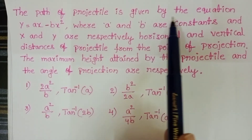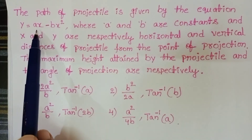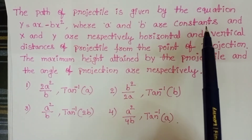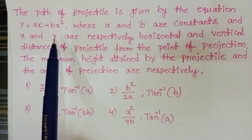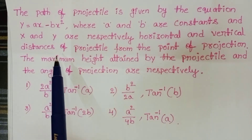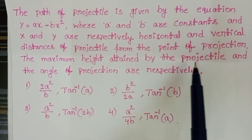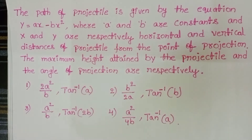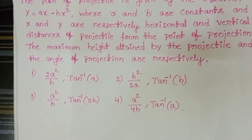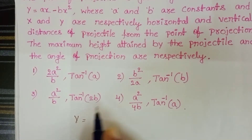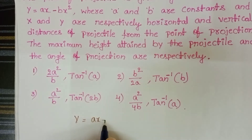The path of a projectile is given by the equation y = ax - bx², where a and b are constants and x and y are the horizontal and vertical distances of the projectile. We need to find the maximum height attained by the projectile and the angle of projection. The given equation of projectile is y = ax - bx².